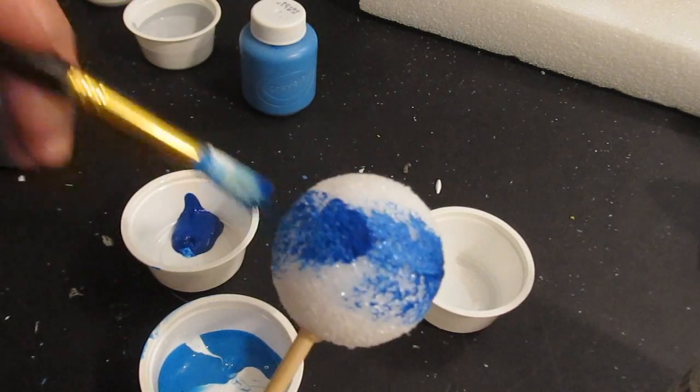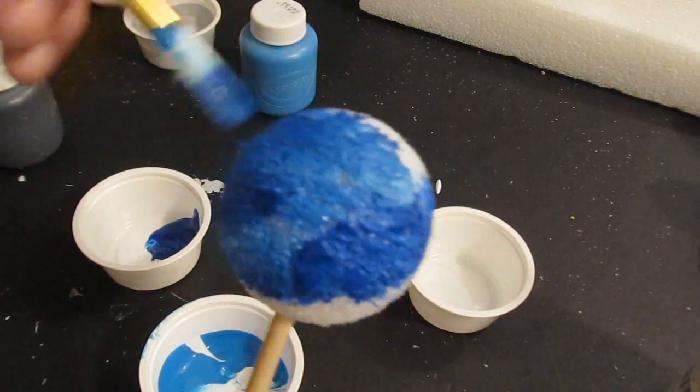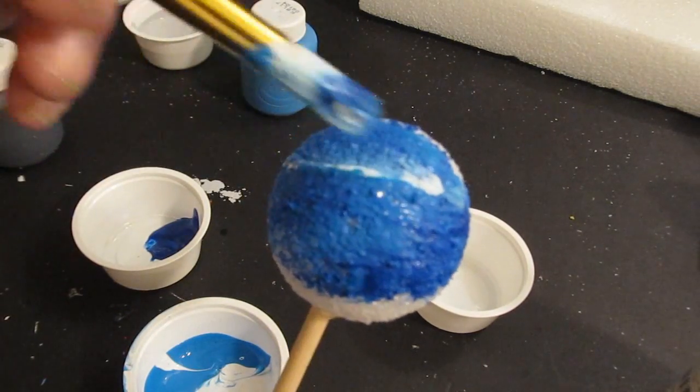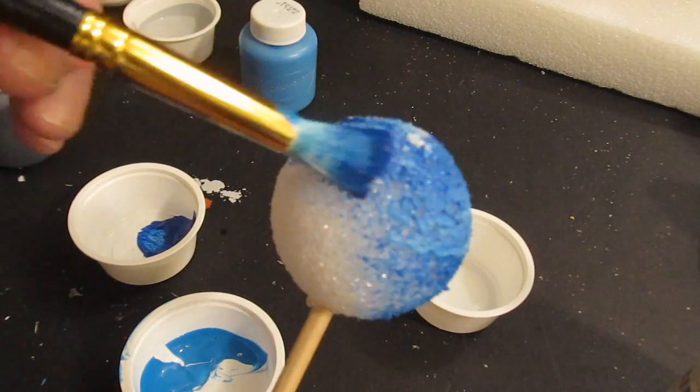There we go. See Neptune? Now we go to a darker blue. And some of that regular blue we had. That light blue. But there we go. A little bit of white. And that's Neptune. And that's fun.